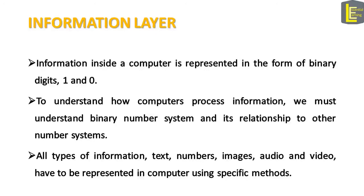Information inside a computer is represented in the form of binary numbers, that is digits 1 and 0. To understand how computers process information, we must understand the binary number system and its relationship to other number systems. All types of information — text, numbers, images, audio, video — have to be represented in a computer using specific methods. All this information is to be converted to binary numbers, that is streams of bits, zeros and ones, or binary digits.